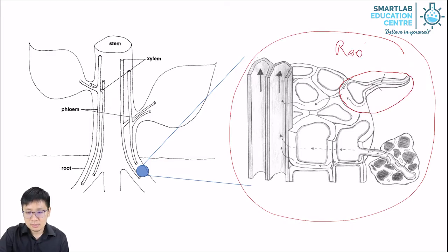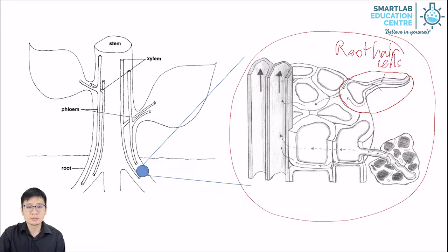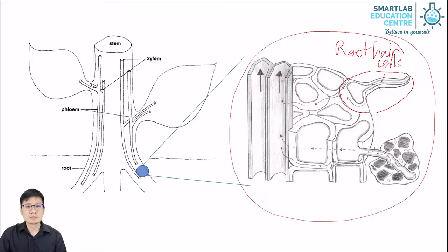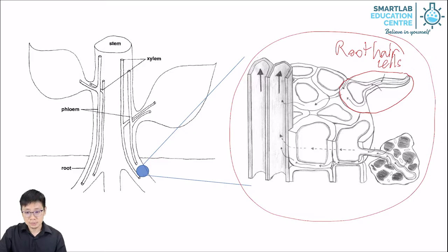Root hair cells have a protrusion that extends into the soil around them. That's to increase the surface area for absorption of water and mineral ions. The other root cells which do not have the protrusion, we just call them root cells.